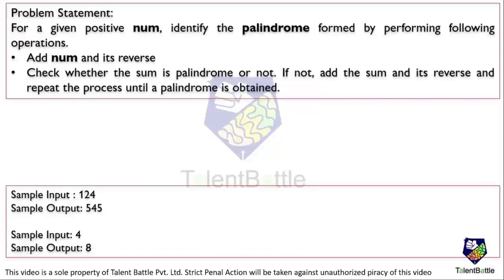Now let's move towards the actual problem statement that we will be discussing in this video. The provided problem statement is: for a given positive number, identify the palindrome formed by performing the following operations. You have to identify a palindrome number depending upon the following operations.